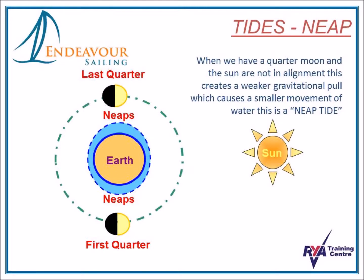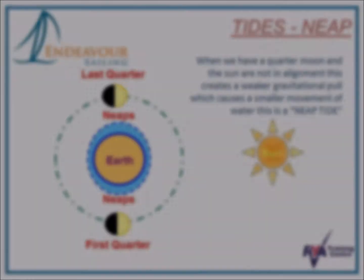When we're at a quarter moon, the Sun, the Moon and the Earth are not in alignment, therefore creating a weaker gravitational pull, which results in a smaller movement of water. This is what we know as a neap tide.